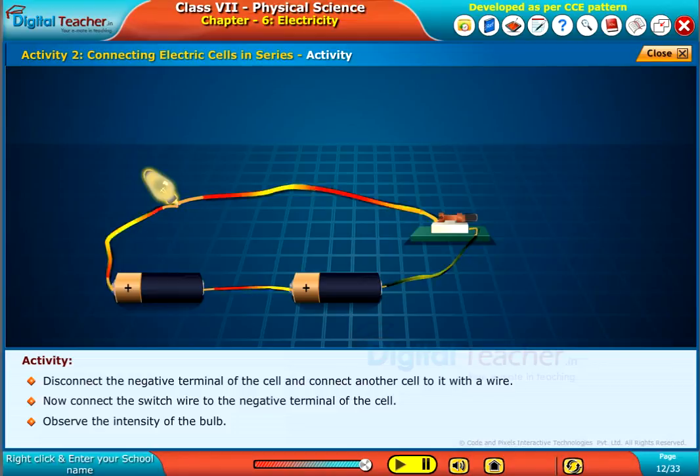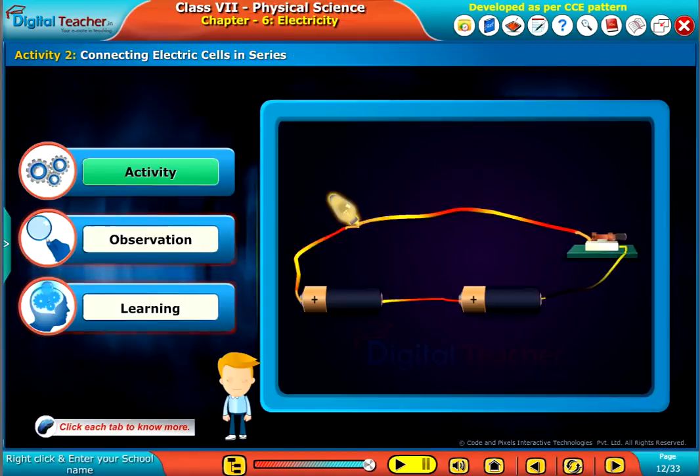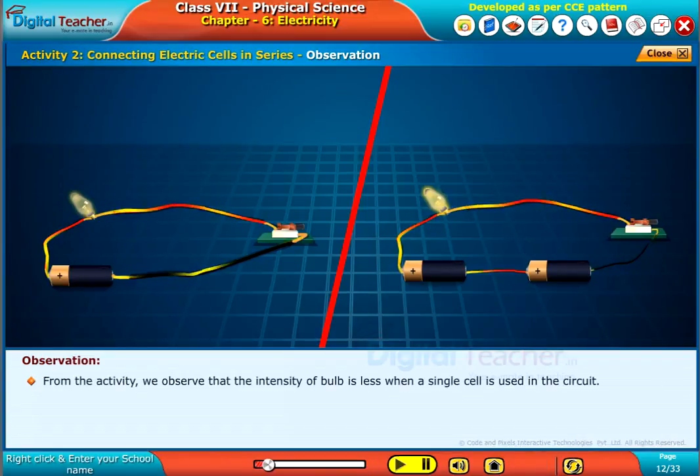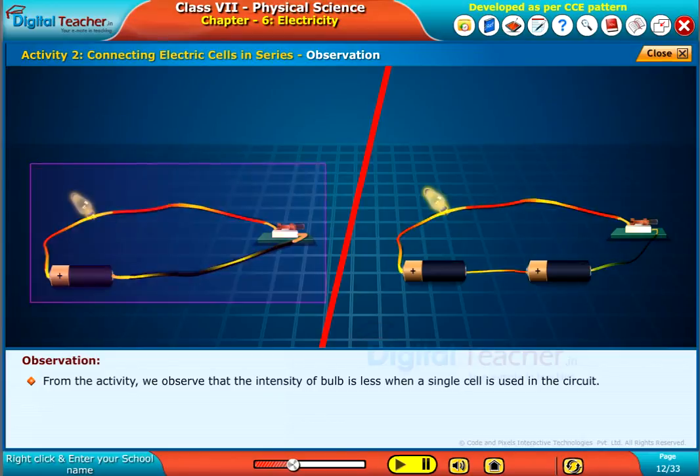Observe the intensity of the bulb. From the activity we observe that the intensity of the bulb is less when a single cell is used in the circuit.